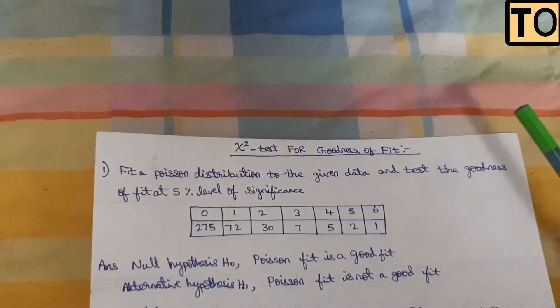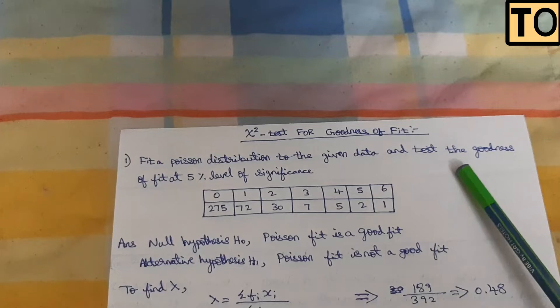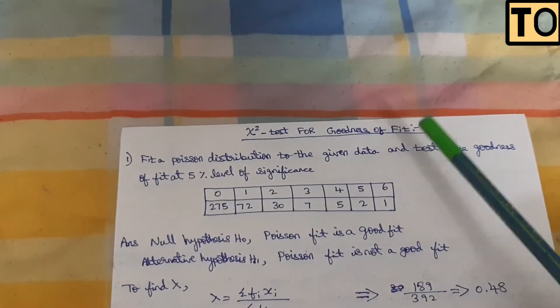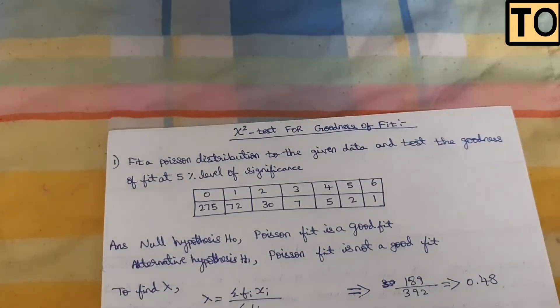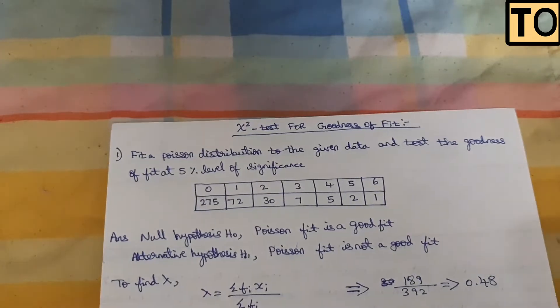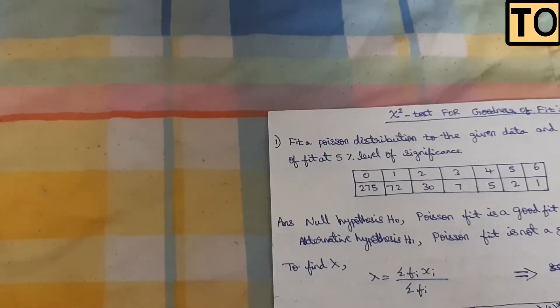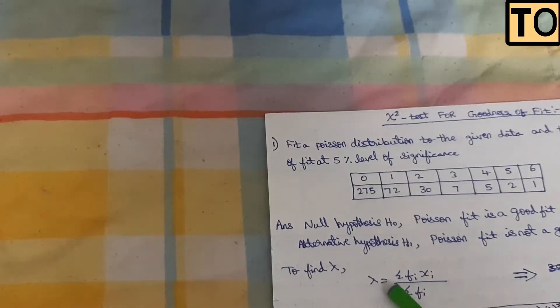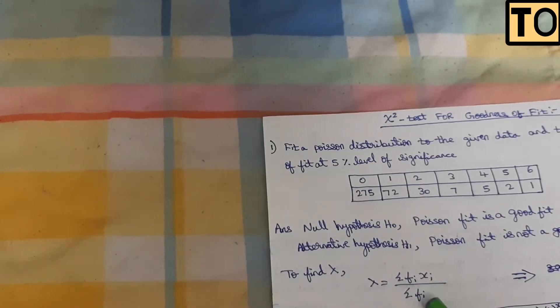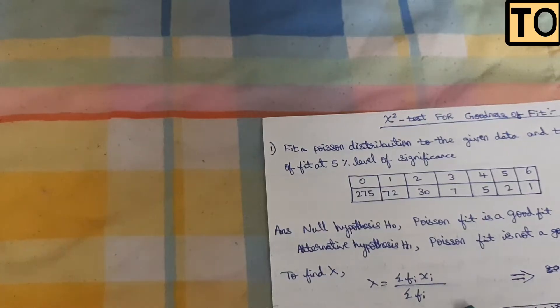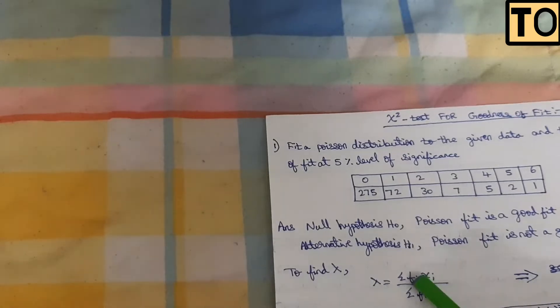Now let's calculate the lambda value. The formula is: lambda equals sigma F-suffix-i times X-suffix-i, divided by sigma F-suffix-i. This is the formula we will use to find lambda from the given data.